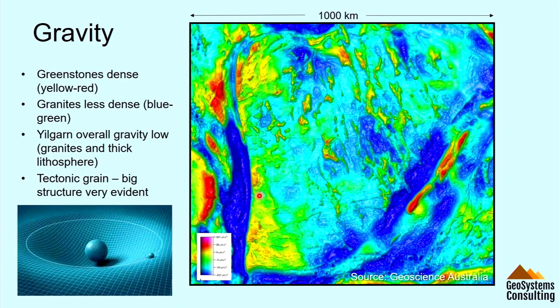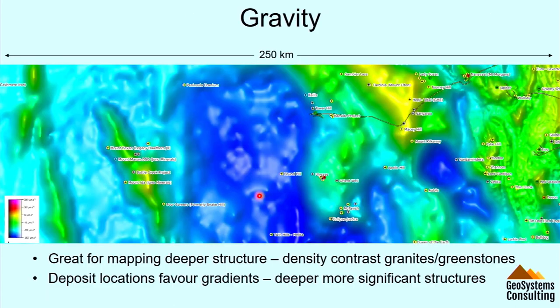Gravity is one of my favourites, and it works really well here in the Yilgarn. We've got these dense greenstones — they tend to be the reds and yellows — and the granites in the bluer colours, mapped beautifully with beautiful structure coming out in the gravity data. Overall, the Yilgarn is a gravity low as a function of the large number of granites, the felsic crust, and of course the thick lithosphere. Deposits often sit on gravity gradients, so we can generate gradient maps and gravity worms and look for deposits. But I wouldn't use those alone, because you can see lots of gradients where there aren't deposits — maybe they're not there because we haven't looked, or maybe they were never there.